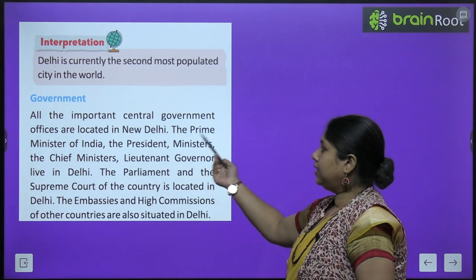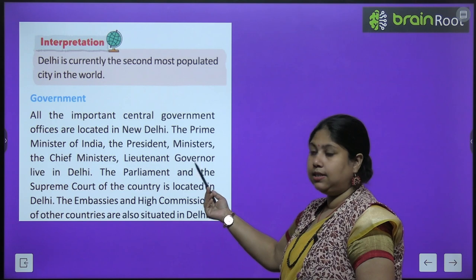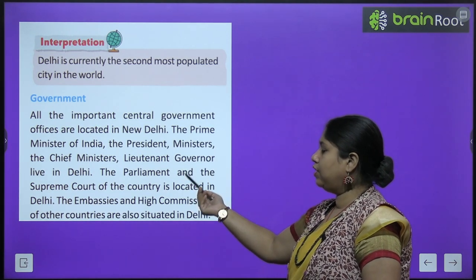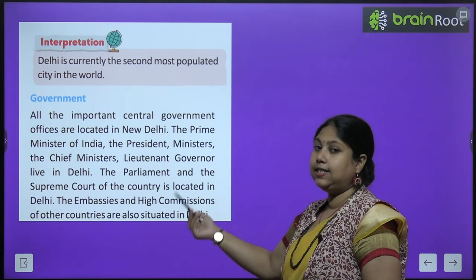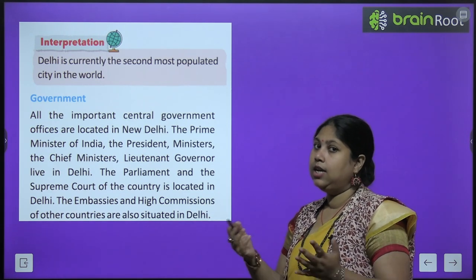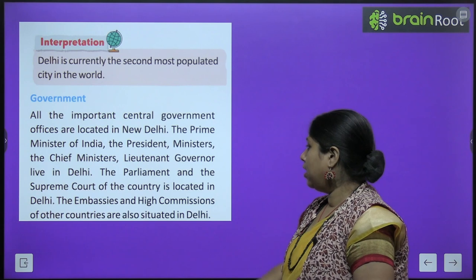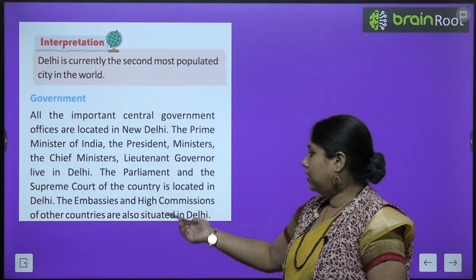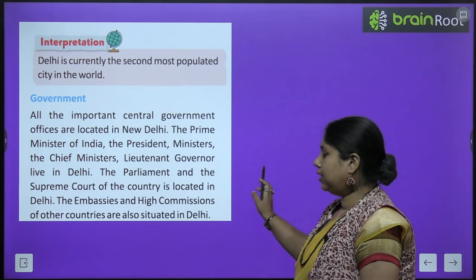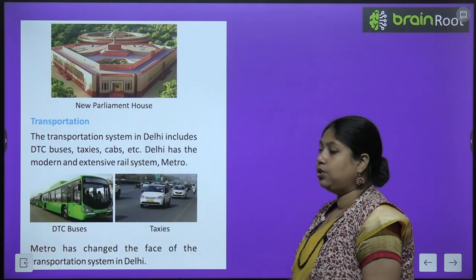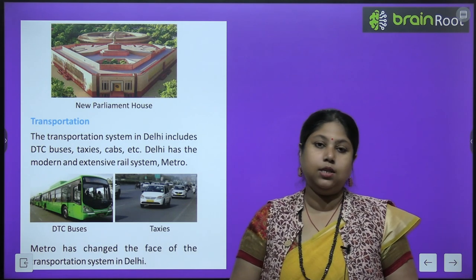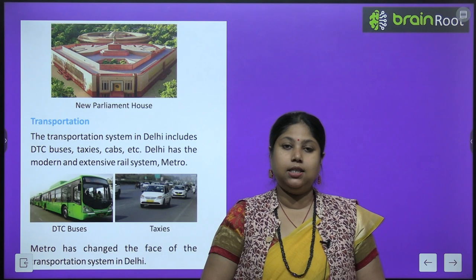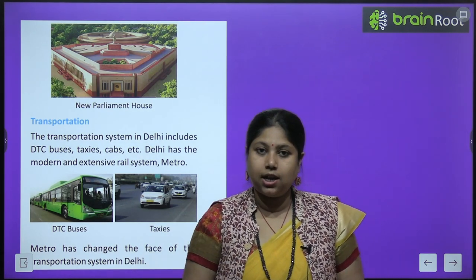All the important central government offices are located in New Delhi. The Prime Minister of India, the President, Ministers, Chief Minister, Lieutenant Governor - ये सभी important लोग Delhi में ही रहते हैं. The Parliament and the Supreme Court of the country are also in Delhi. The embassies and high commissions of other countries are also situated in Delhi, क्योंकि ये हमारी राजधानी है.